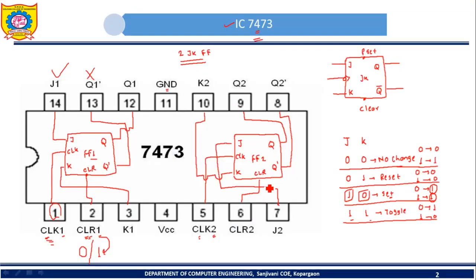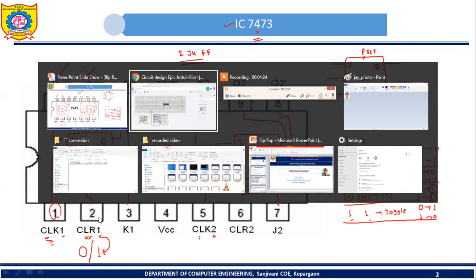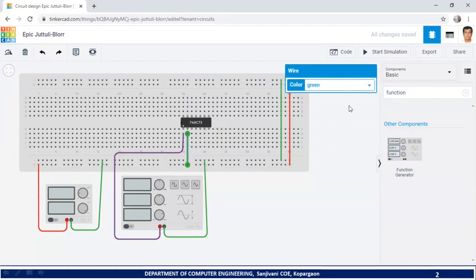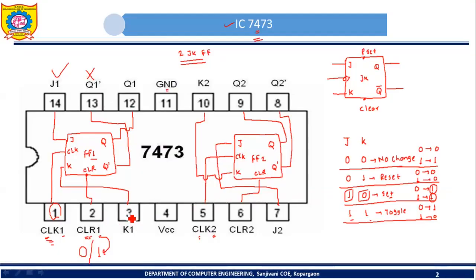Pin number 2 acts as clear input and it is an active-low input. If you want to use it, connect it to logic 0. Since I don't want to use the clear input, I am going to connect pin number 2 to logic 1 — all points in the bottom-most row act as logic 1. Pin number 3 acts as K input; by using this K input I can give either 1 or 0 as input to the JK flip-flop.